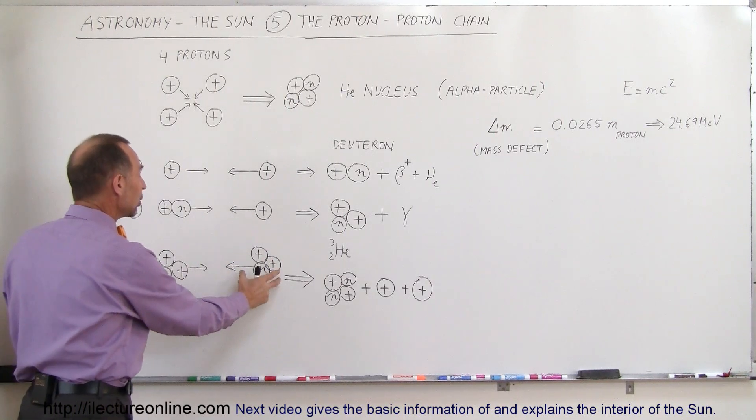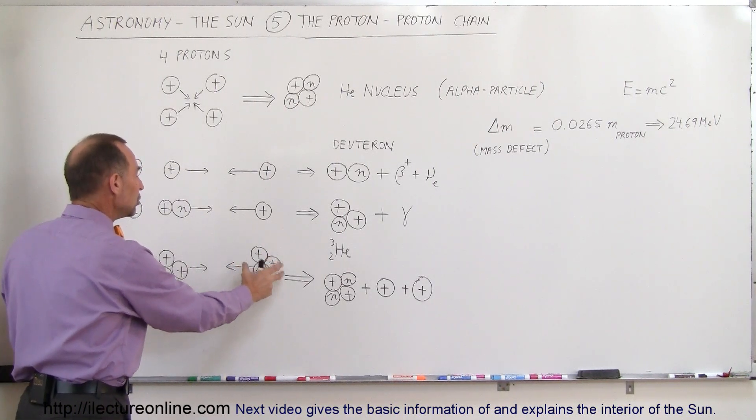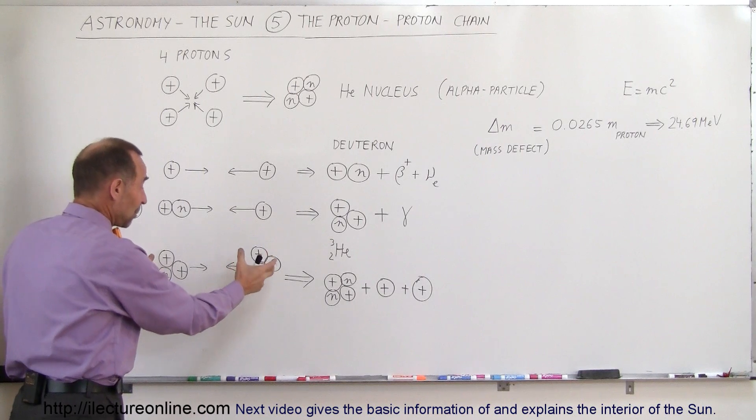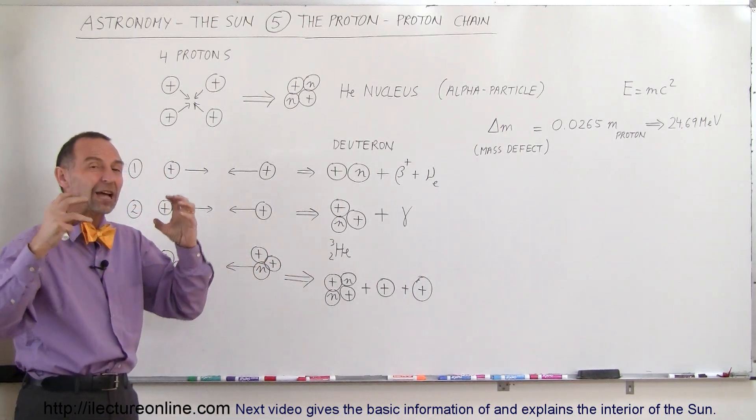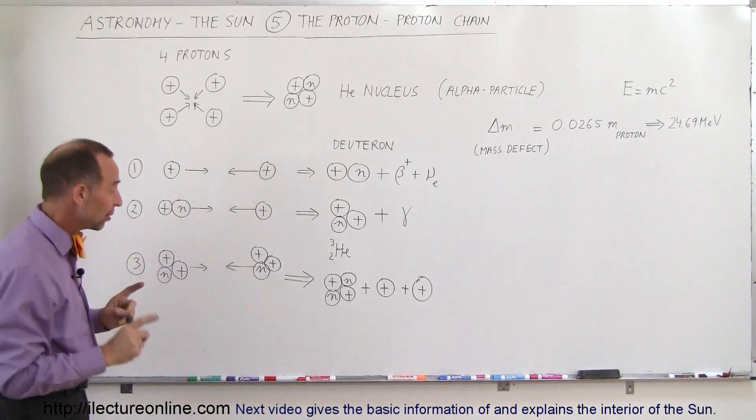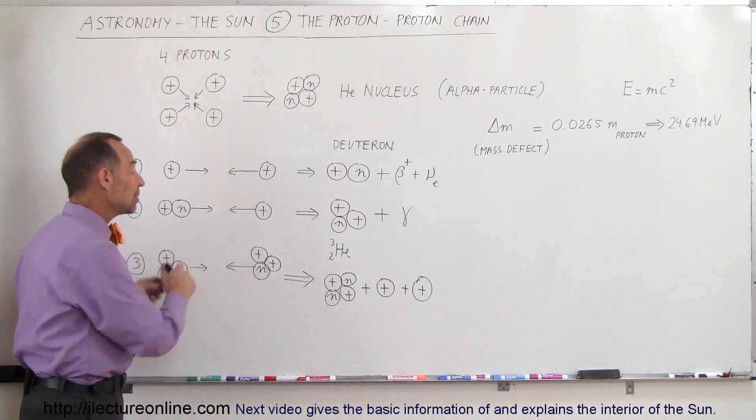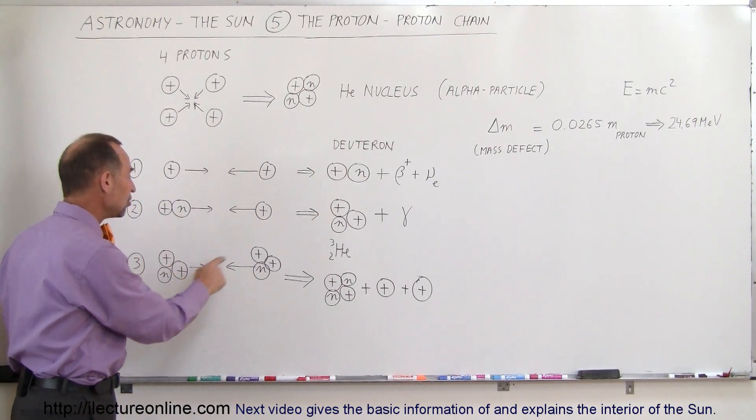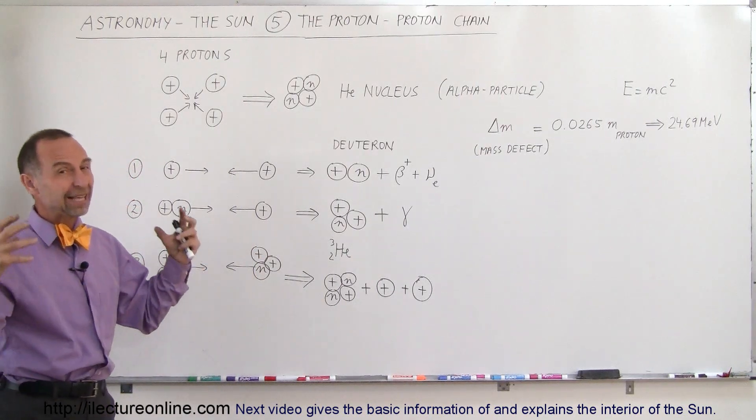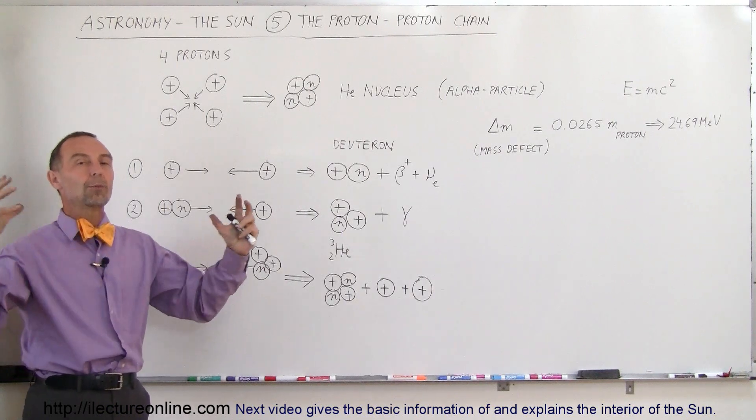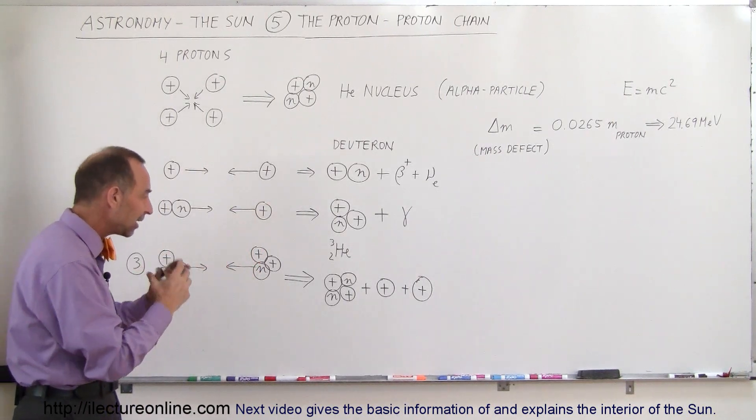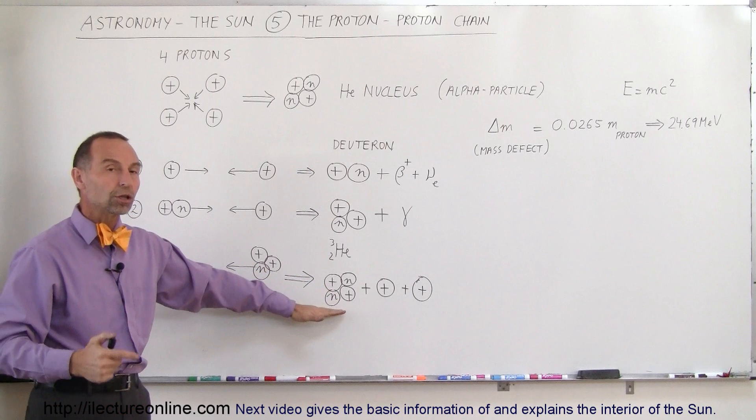The final step in the proton-proton chain is where you have two of these helium-3 nuclei that come together at high enough velocities for them to actually collide with each other. Here, you definitely need at least 10 million degrees Kelvin because they each have two positive charges, and they definitely don't want to be together. There's just an enormous repulsive force between those positive charges, but with a high enough velocity, it will slam together and form a helium nucleus.